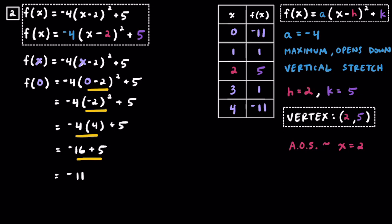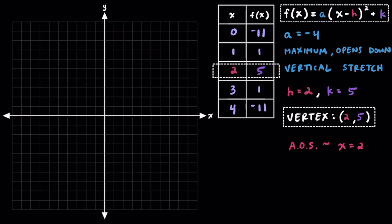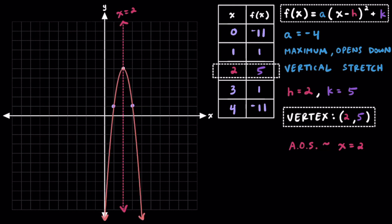Now that we have a completed table, let's sketch the graph. Plotting the vertex at 2 comma 5 in quadrant 1, and sketching the axis of symmetry at x equals 2. The point 1 comma 1 is to the left of the AOS, and 3 comma 1 is to the right. The points 0 comma negative 11 and 4 comma negative 11 fall just outside the visible graph area, but the parabola connects through them. Visually, because a equals negative 4, the parabola has a maximum, opens downward, and has a vertical stretch making it skinnier.